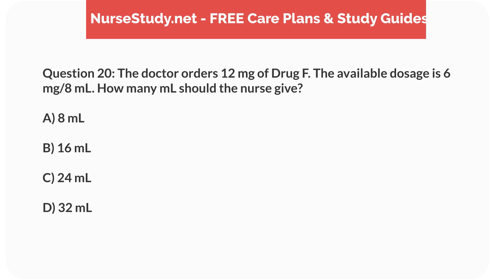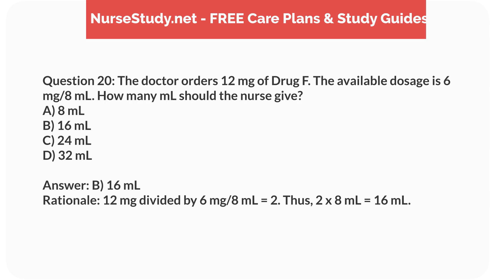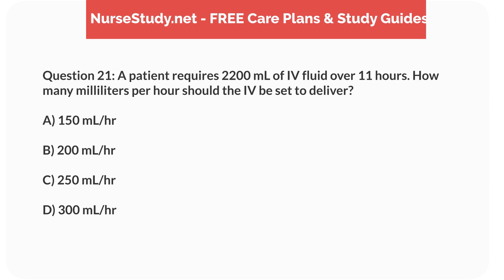Question 20. The doctor orders 12mg of drug F. The available dosage is 6mg per 8mL. How many mL should the nurse give? a. 8mL, b. 16mL, c. 24mL, d. 32mL. Answer: b. 16mL. Rationale: 12mg divided by 6mg per 8mL equals 2. So, 2 times 8mL equals 16mL.